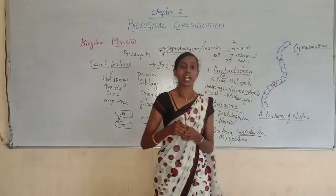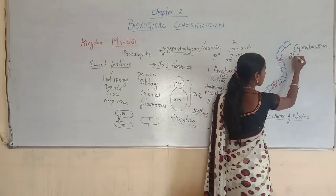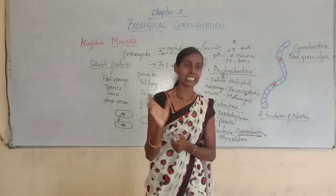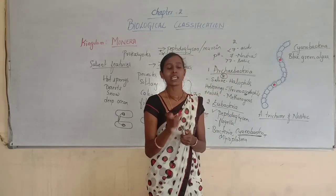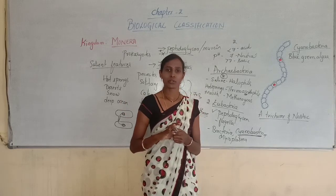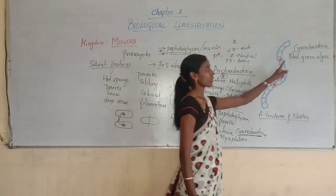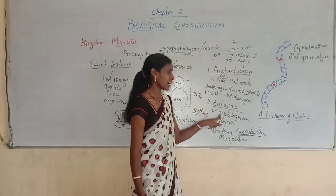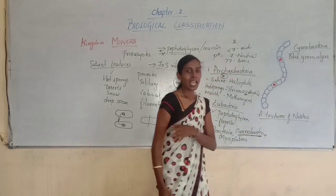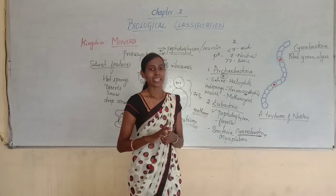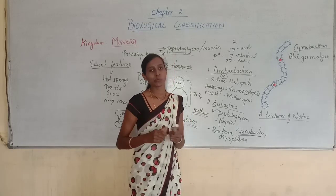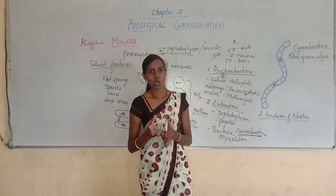Cyanobacteria are also referred to as blue-green algae because they contain the pigment chlorophyll A, which is similar to that in plants. Since all plants contain chlorophyll A, they can prepare their own food. Cyanobacteria, being Eubacteria, contain peptidoglycans. They are usually present in fresh water — in lakes, ponds, rivers — and in moist soil.